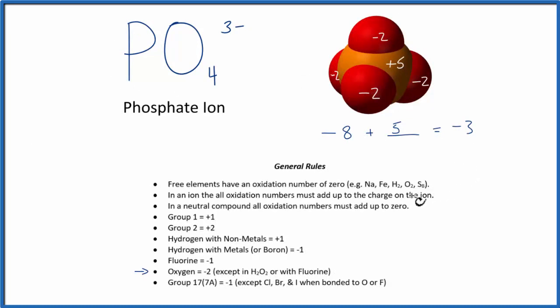So to recap, we found the oxidation numbers on the elements we knew. In this case, we knew the oxygen was going to be a minus two. We used that information along with the charge on the overall ion to figure out the oxidation number of the central phosphorus.